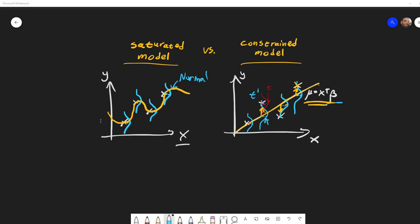The difference between the log likelihood of these two models, the log likelihood of the saturated model minus the log likelihood of the regular model, is a quantity which is called the unit deviance. And we will talk about it in a future video.